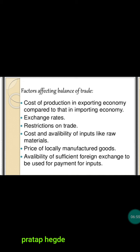The second factor affecting balance of trade is exchange rates — the rate at which one country's currency is exchanged with another country's currency. Exchange rates play a major role in deciding the export and import situation. If exchange rates are favourable, there will be more international trade. The third factor is restrictions on trade. Some countries have more restrictions on imports and exports, and the severity of these restrictions on foreign trade also plays a major role in deciding a country's balance of trade.